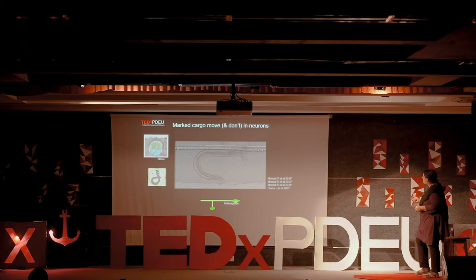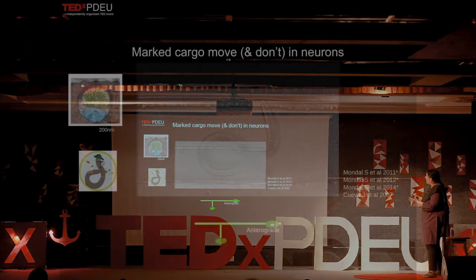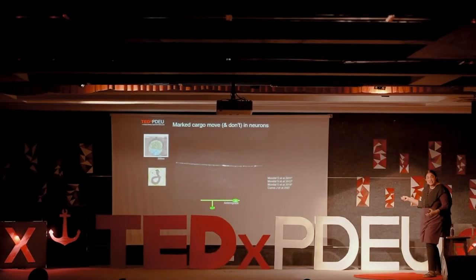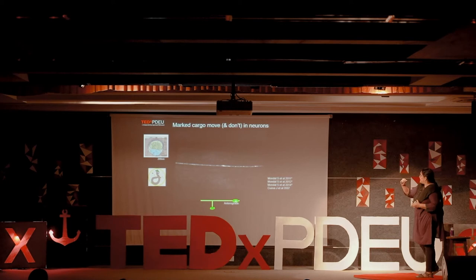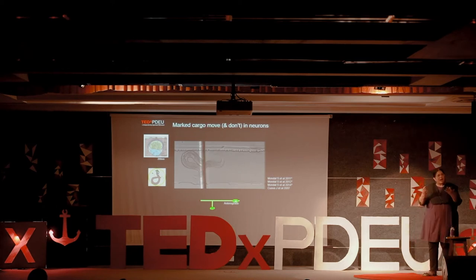What you do is take this little animal, trap it in a microfluidic chamber, turn on light, and then you see cargo movement. You see cargo move in both directions, akin to what Paul Weiss saw with his suture experiment. You also see that some cargo does not move. And it's striking how fast and smoothly cargo is moving.